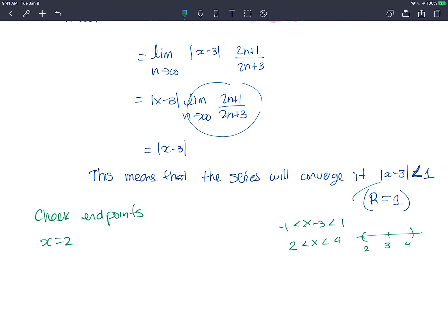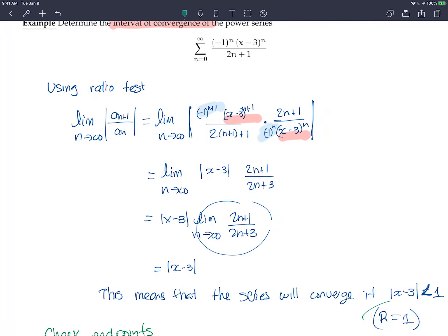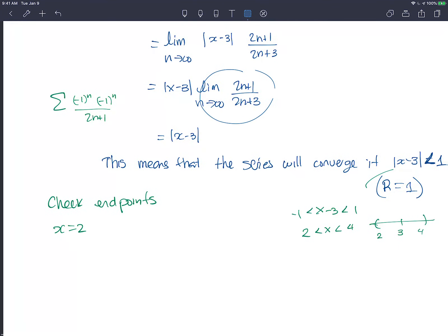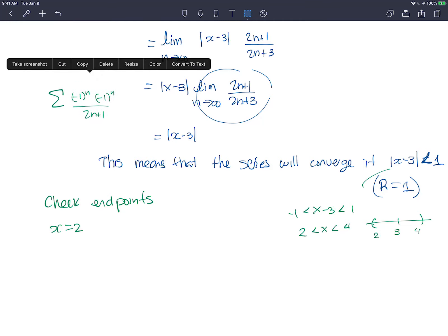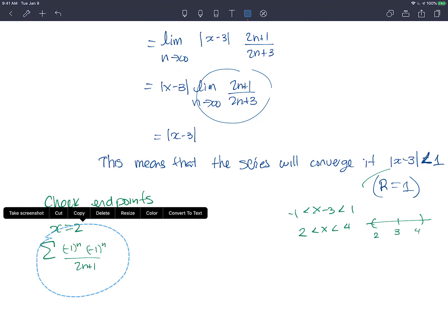So let's check out x equals 2. That's the endpoint on the left. At x equals 2, I'm going to plug in a 2 into this expression. Let me write it here because I have the expression a little bit far. So I'm going to have, it's going to become, at x equals 2, I would have negative 1 to the power of n, 2 minus 3 becomes negative 1 to the power of n divided by 2n plus 1, right?